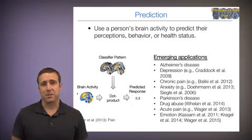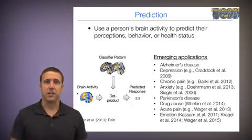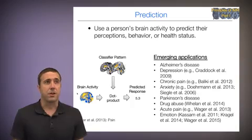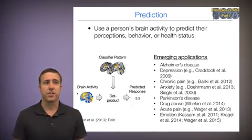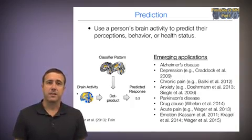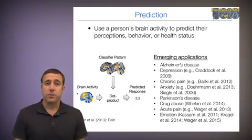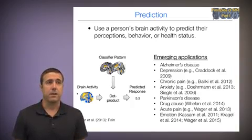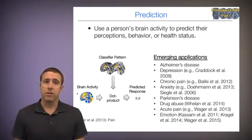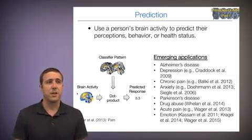There are many emerging applications of prediction that cover really the whole space of different possible things we might care about in terms of health outcomes. So this is really an exciting area in terms of translation and clinical science. So some of the emerging applications are to Alzheimer's disease, to depression, to chronic pain and anxiety, to neurological disorders like Parkinson's disease, to behavioral issues like substance use and abuse, and to basic emotions and other areas of research.